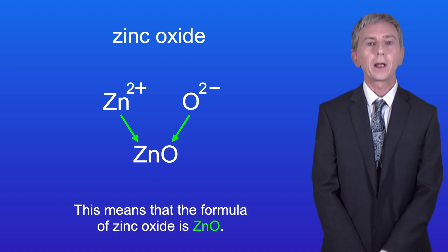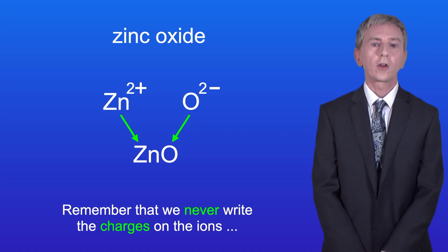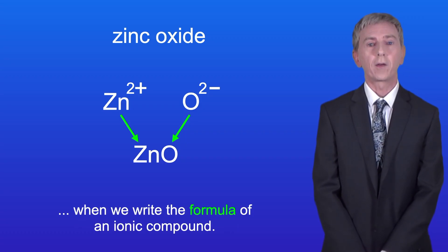This means that the formula of zinc oxide is ZnO. And remember that we never write the charges on the ions when we write the formula of an ionic compound.